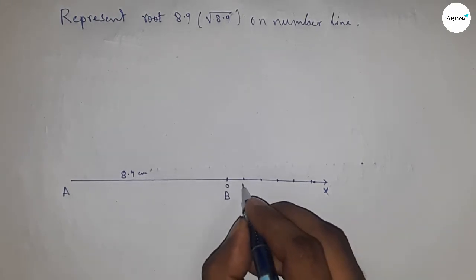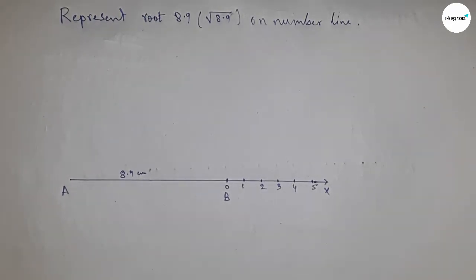So this is 0, 1, 2, 3, 4, 5, 6, and so on. And this is point C.